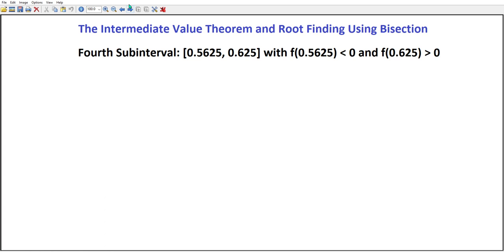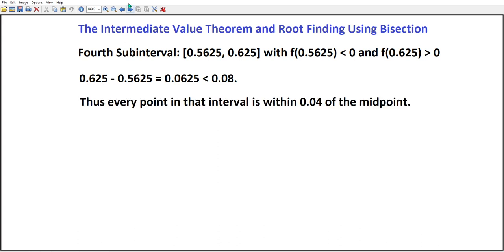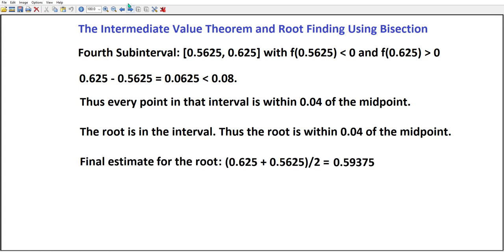Now, you might think we would keep doing this forever, and we would if we really wanted it to be accurate. But remember, we want this to be within 0.04 of the answer. The interval has length 0.625 - 0.5625 = 0.0625, which is less than 0.08, which means the midpoint is within 0.04 of everything in the interval. The root is in the interval, thus the root is within 0.04 of the midpoint.